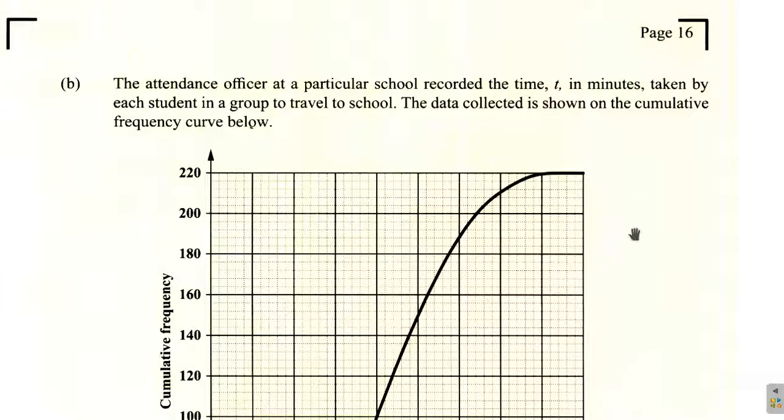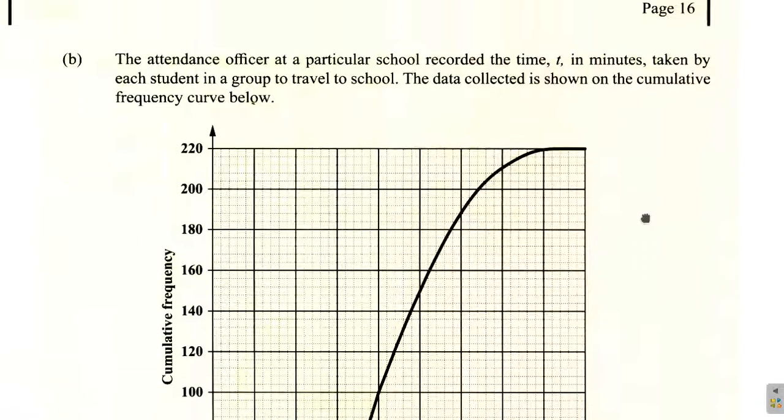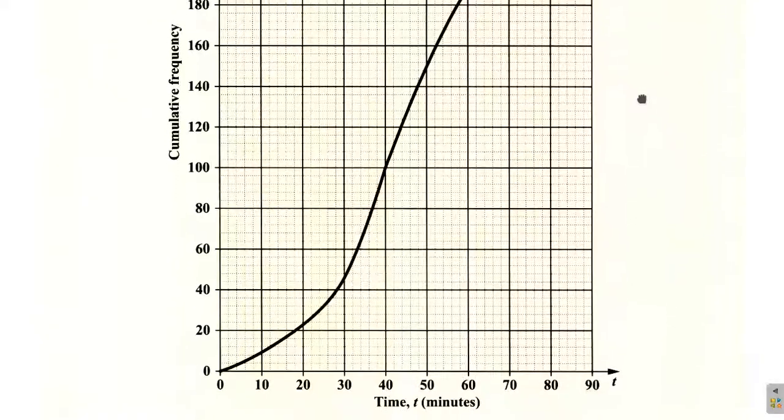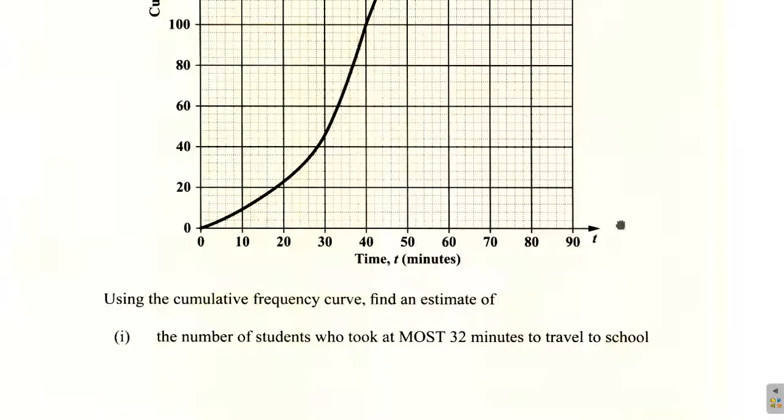We're now looking at part B of question 5 of the May 2024 CSEP Mathematics paper. It says the attendance officer at a particular school recorded the time t in minutes taken by each student to travel to school. Using the cumulative frequency curve, find an estimate of the number of students who took at most 32 minutes to travel to school.